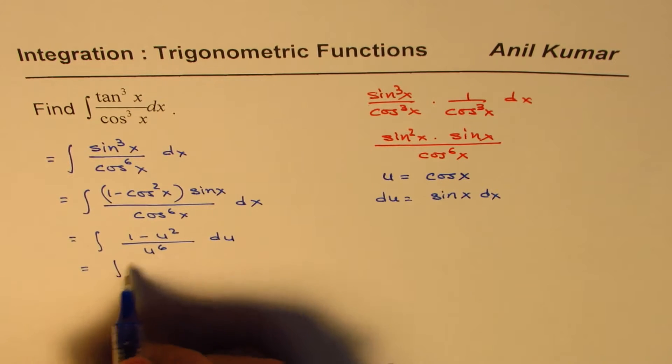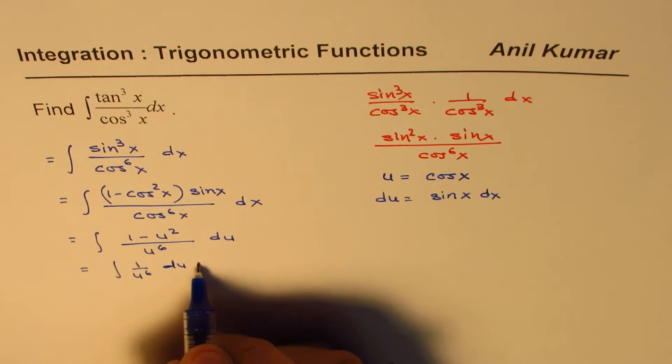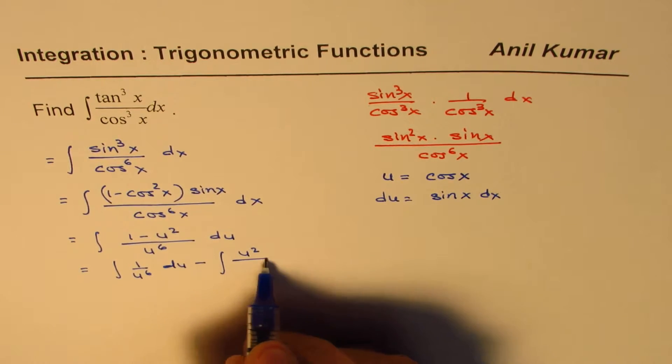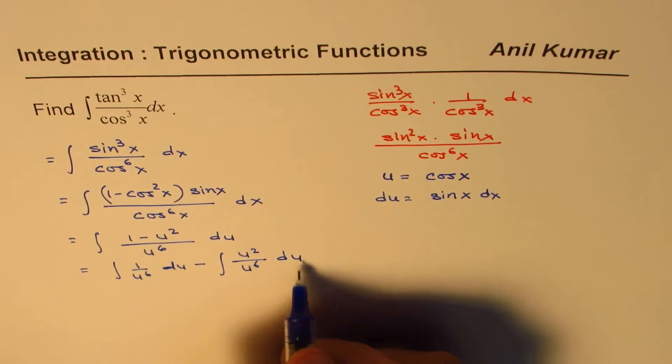Now you can write this as integral of 1 over u to the power of 6, du. Let me break them up now, minus integral of u square over u to the power of 6, which is u to the power of 4, du.